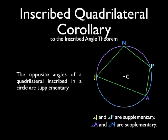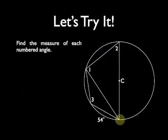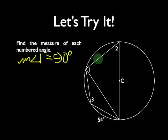So let's try this. Let's find the measure of each numbered angle. Let's start with angle 1 because that's easy. Notice that we have a diameter, and so angle 1 is inscribed in a semicircle. Boom! It's 90 degrees by the right angle corollary.